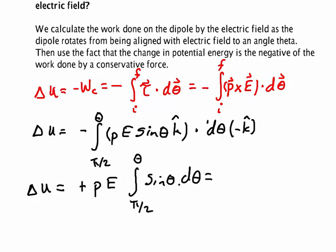Well, the integral of sine theta d theta is negative cosine theta, so we got minus P E cosine theta evaluated from pi over 2 to theta.